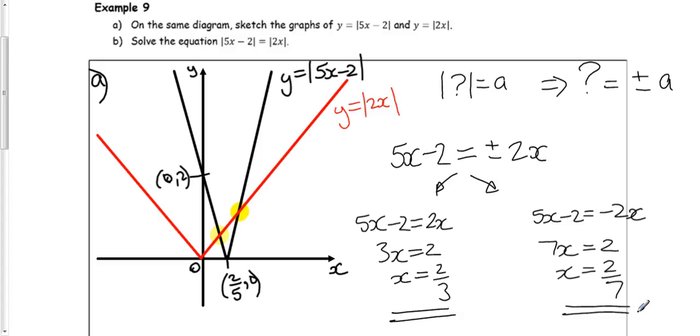Now looking at the graph, we can see those are sensible answers. Both solutions, we're going to have positive x values. And from the graph, one of them is going to be smaller than two-fifths. Well, 2 sevenths is smaller than two-fifths. And the other one is going to be bigger than two-fifths. Two-thirds is bigger than two-fifths.